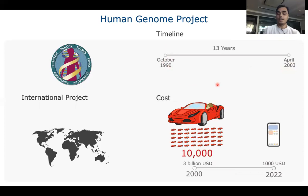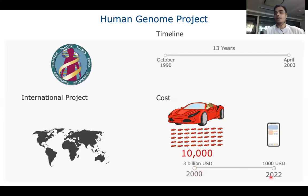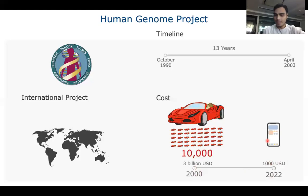The project cost 3 billion US dollars. To visualize that amount of money, you could have bought 10,000 Ferrari cars for the same amount in the year 2000. But now in 2022, it only costs around 1,000 US dollars to sequence a human genome — equivalent to the cost of an iPhone. Technologically, we have made so much advancement that the cost has been reduced significantly, making genome sequencing affordable and effective for medical and scientific research.